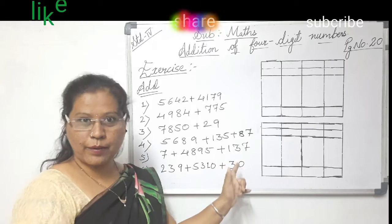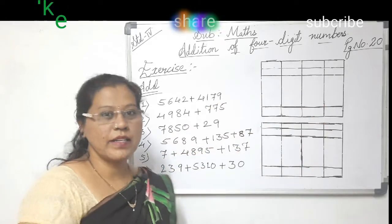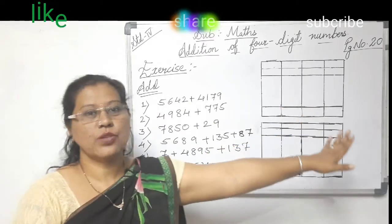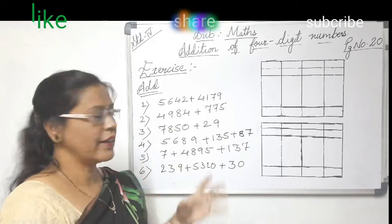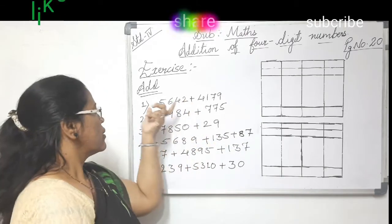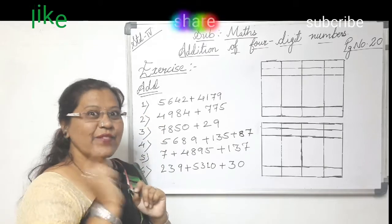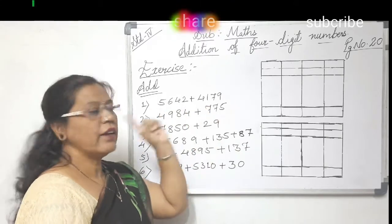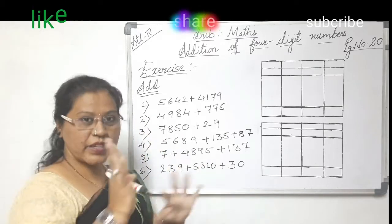As you can see on the board, my dear friends and students, Subject Maths — addition of 4-digit numbers — this is chapter 3, that is addition, on page number 20, and we are going to solve the exercise. So add the given numbers. There are a total of 6 sums in this exercise. The first sum given to us is a 4-digit number added to a 4-digit number. Here we have 5,642 plus 4,179. The first step is reading the given numbers.